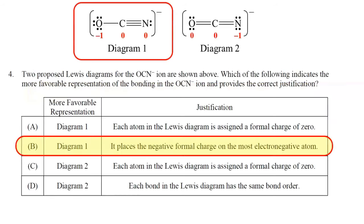Diagram 1 places the negative formal charge on oxygen, and diagram 2 places it on nitrogen. Electronegativity increases from left to right across a period, so oxygen is more electronegative than nitrogen. The preferred diagram is diagram 1, so the answer to question 4 is choice B — diagram 1 is more favorable because it places the negative formal charge on oxygen, the most electronegative atom.